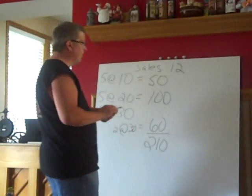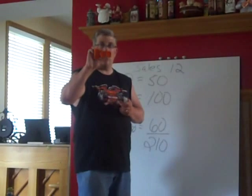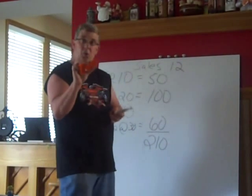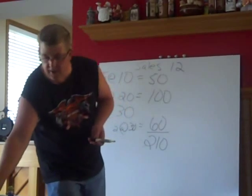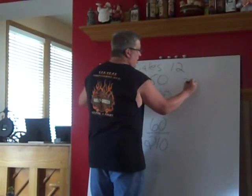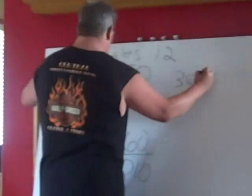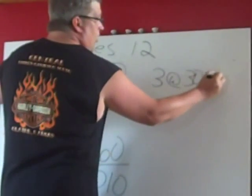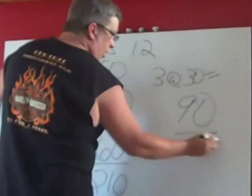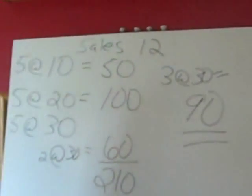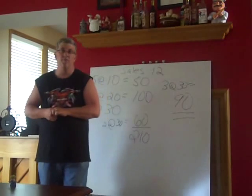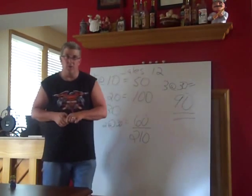Finally, our ending inventory — we have three orange ones left. Remember, these are keeping their color identity, so they're keeping their cost identity. So these three, at $30 each, gives us an ending inventory of $90, which will be going on our balance sheet.